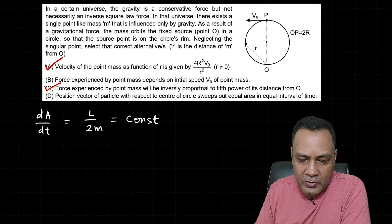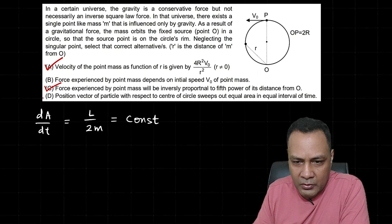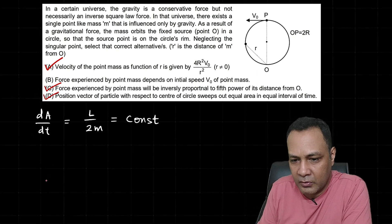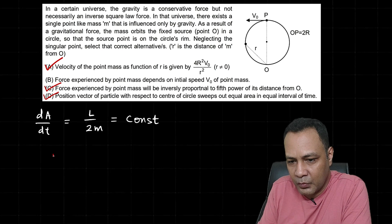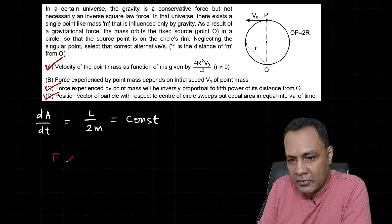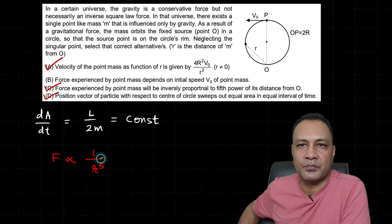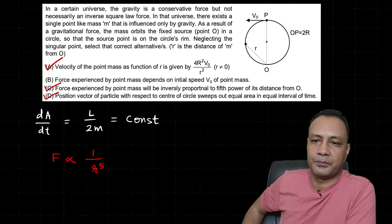So the key takeaway: in this kind of central force motion, F is central but not inverse square — F is proportional to 1/R⁵. Thank you.